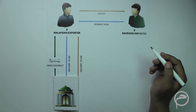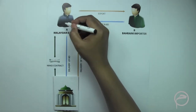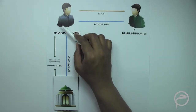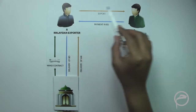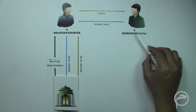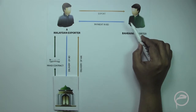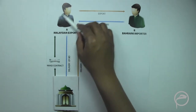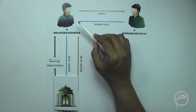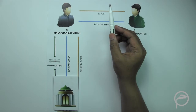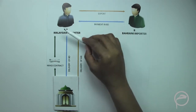Let us discuss a currency swap example. Consider a Malaysian exporter and a Bahraini importer. The exporter is exporting certain commodities from Malaysia to Bahrain. If the payment is due after three months and will be done in Bahraini dinar, the Malaysian exporter would like to hedge its risk, because after three months the exchange rate between the Malaysian ringgit and the Bahraini dinar could vary.